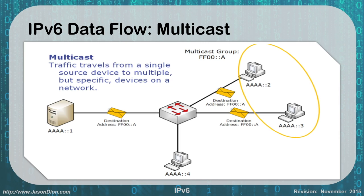Multicast is also the same as in IPv4. We're going to join a multicast group again, and the traffic will be destined for that multicast group — in this case FF00 double colon A — and that will go to both devices that have subscribed to the multicast group.